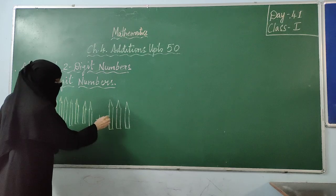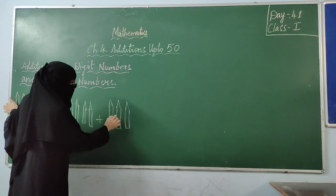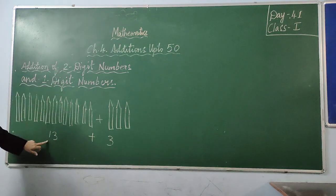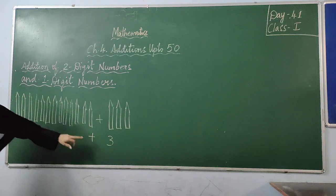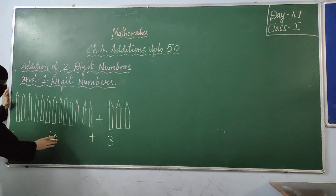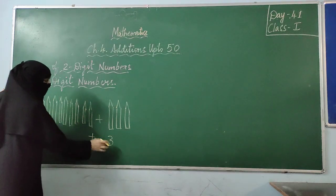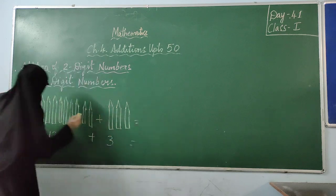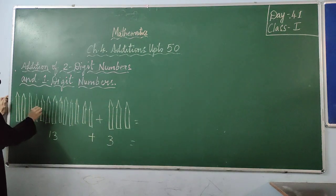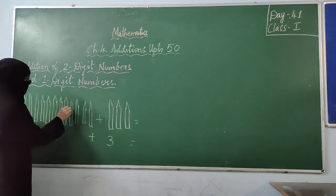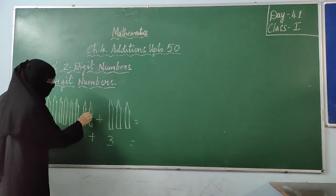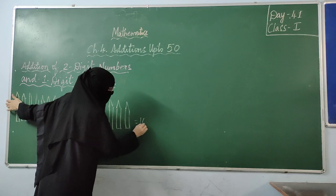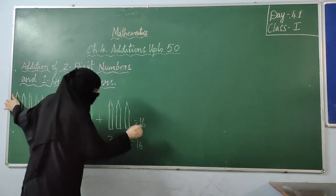Plus, now this group: 1, 2, 3. Then counting all together: 1, 2, 3, 4, 5, 6, 7, 8, 9, 10, 11, 12, 13, 14, 15, 16. This is the answer we got.